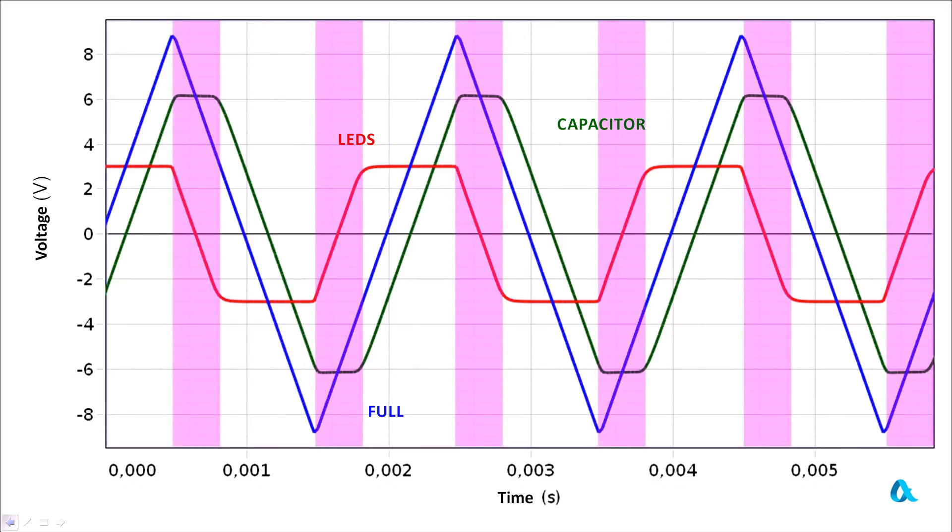And here there are intervals when the diode bridge switches from one conducting state to another. At this time it is itself closed, no current flows through the circuit, and the voltage across the capacitor remains constant.